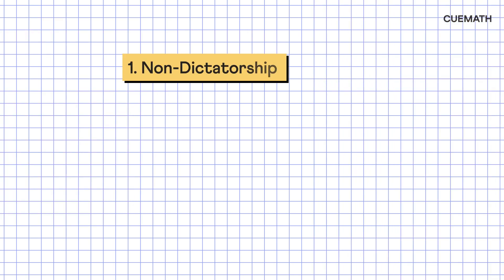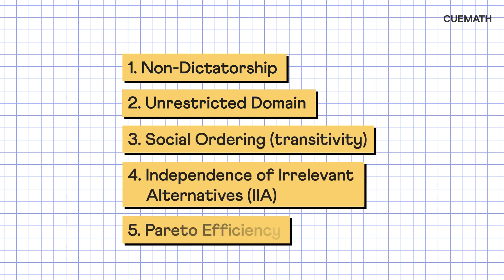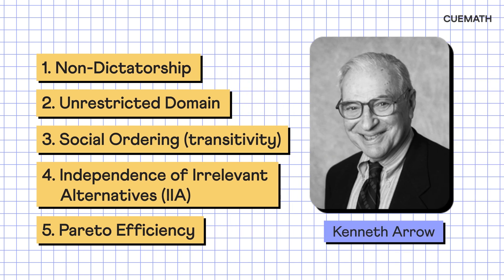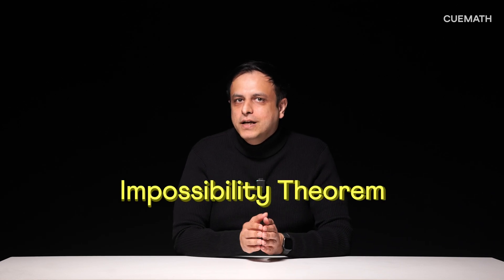This was one of the five conditions for a fair voting system laid down by the mathematician Kenneth Arrow. But later on, his own Nobel Prize-winning impossibility theorem showed that no voting system can meet all five criteria perfectly. So, is the search for an ideal voting system over? Not quite.